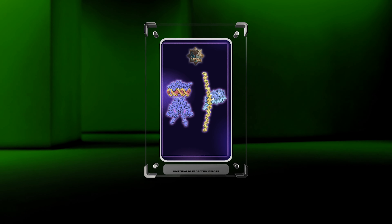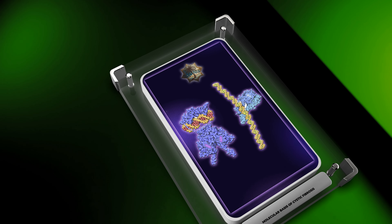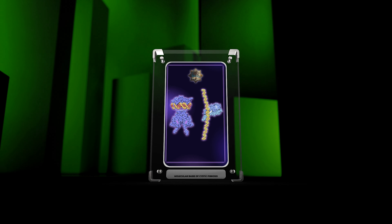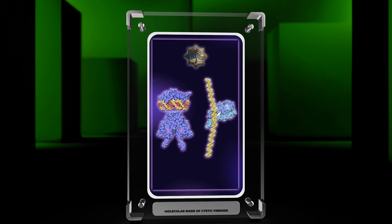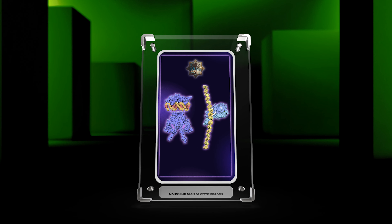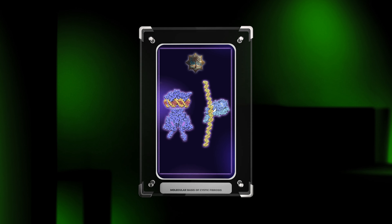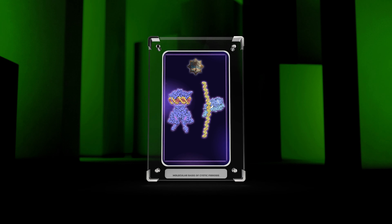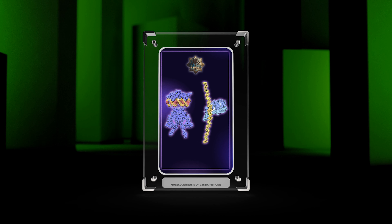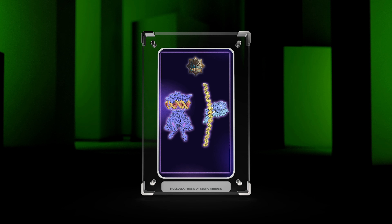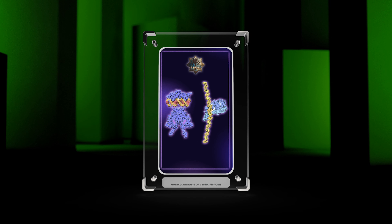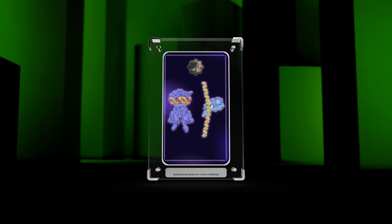Welcome students. Today we will delve into the fascinating world of cystic fibrosis (CF) and explore the molecular intricacies underlying this genetic disorder. CF is caused by mutations in the CFTR gene, which encodes a protein involved in ion transport across cell membranes. Understanding the various aspects of CFTR function and dysfunction will shed light on the pathophysiology of CF and provide insights into potential therapeutic strategies.